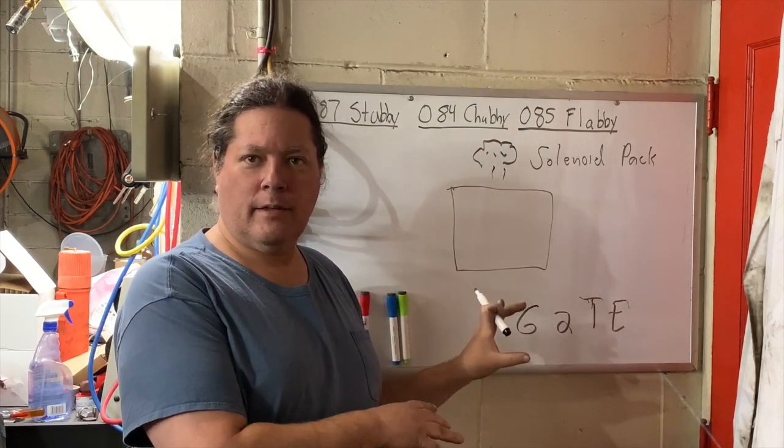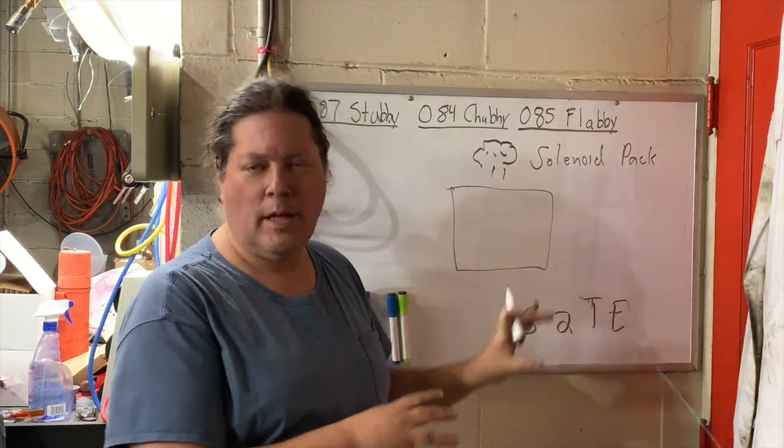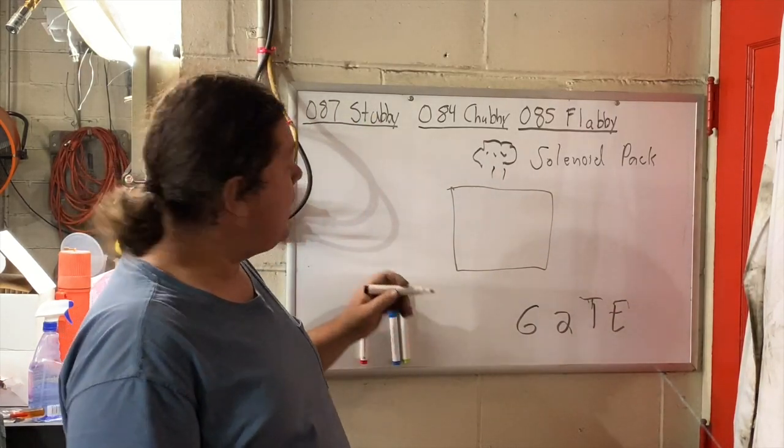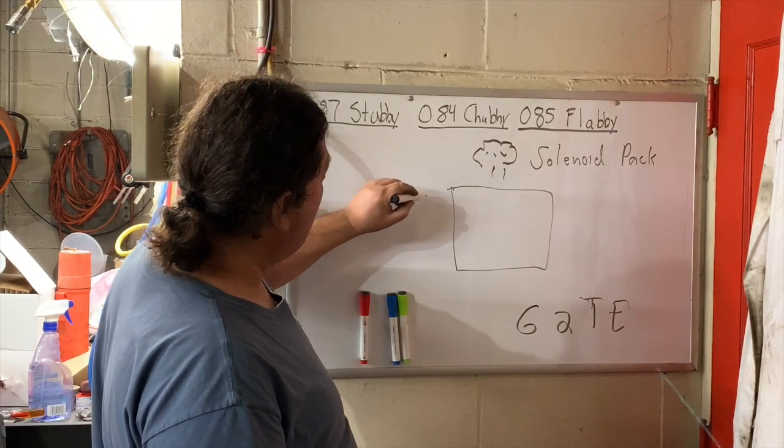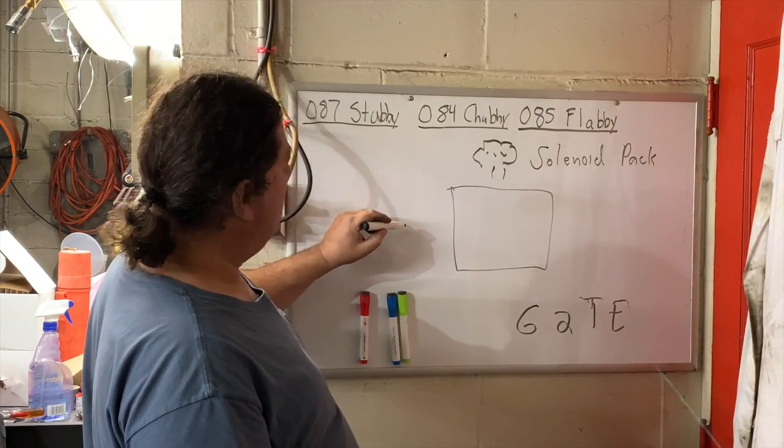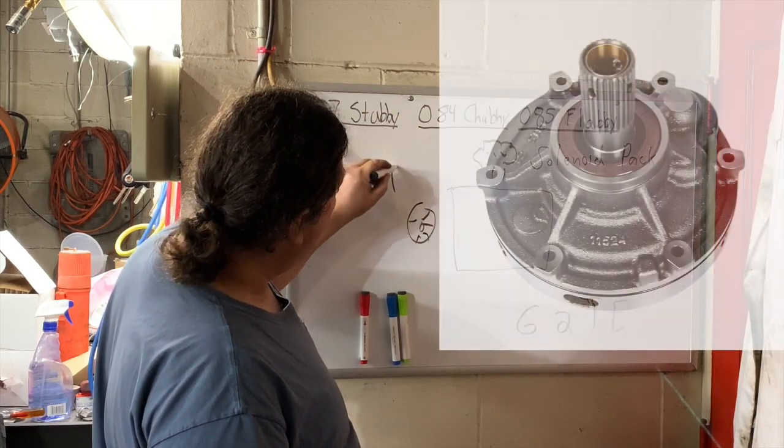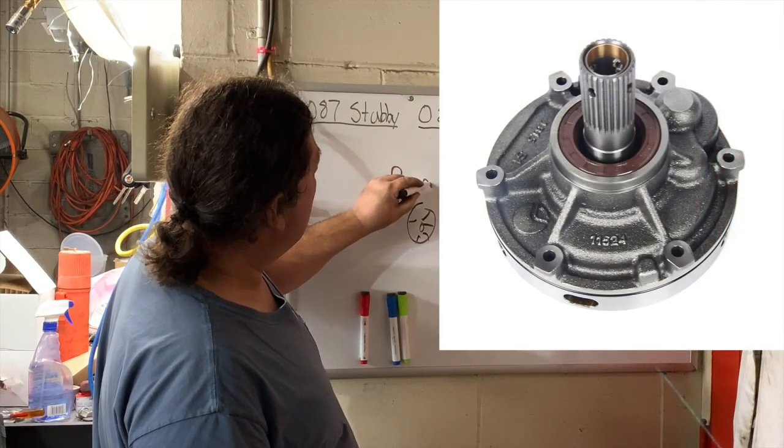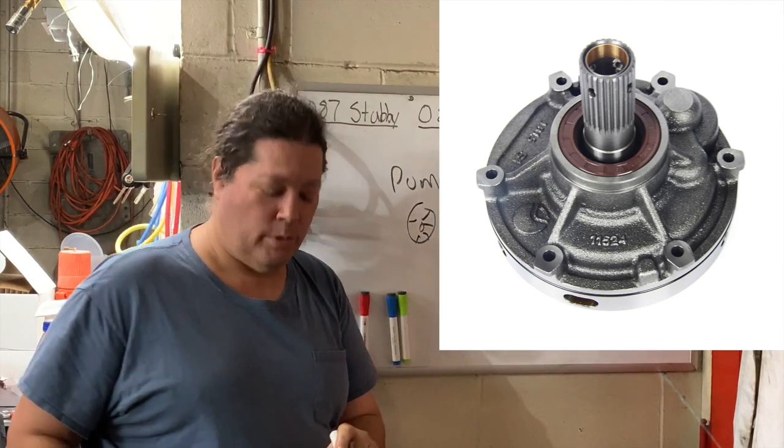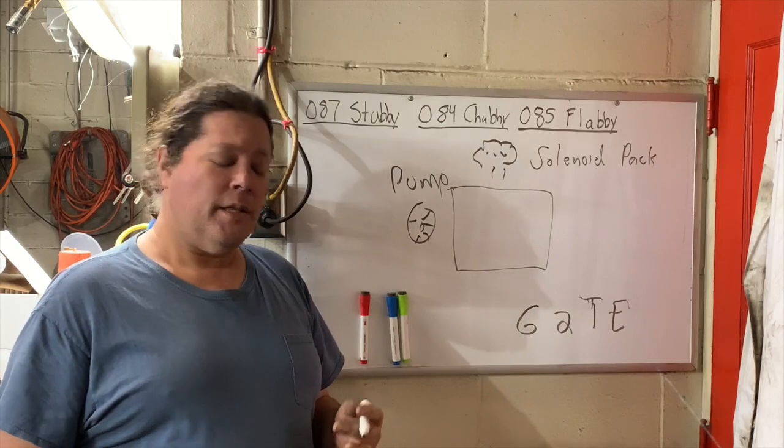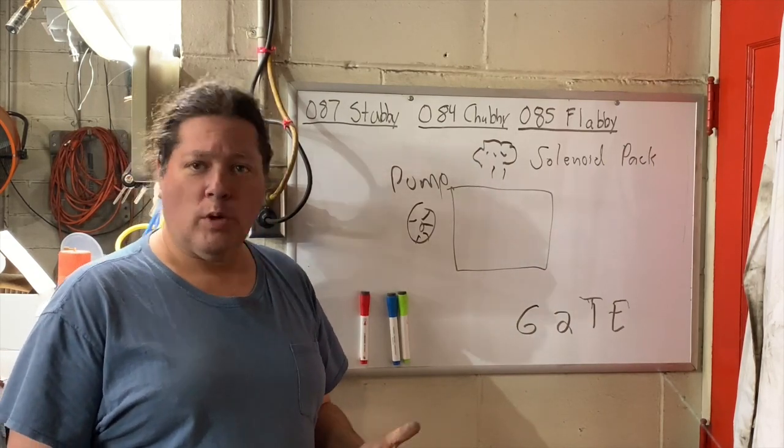Most of the problems that come with the transmission are centered around the solenoid pack. Let's move on. There's another sub-assembly in the transmission, which is over here. What would it look like? I'll draw a little water wheel because this is the pump. The pump does what you would think it would do: it supplies pressurized fluid to the transmission. The pump is sort of a binary thing - it either works or it doesn't.